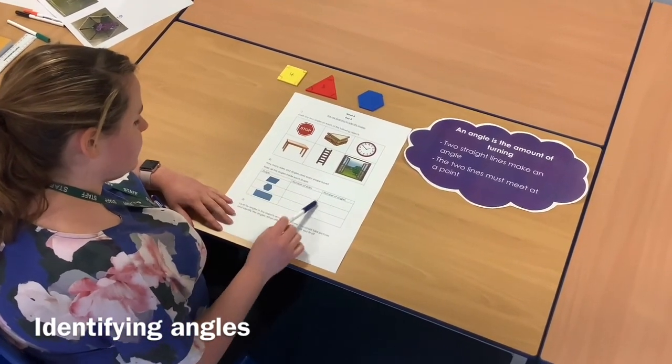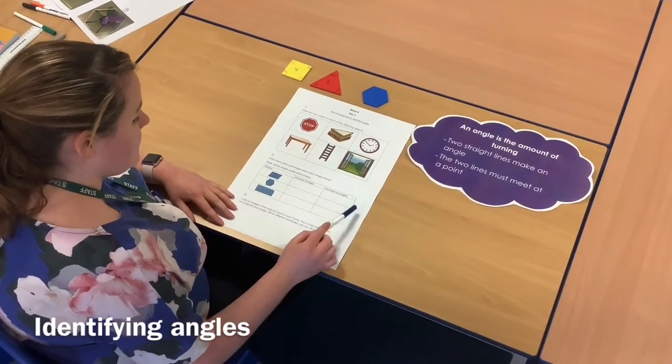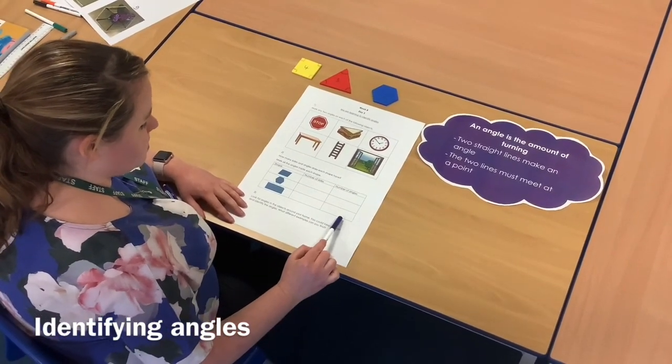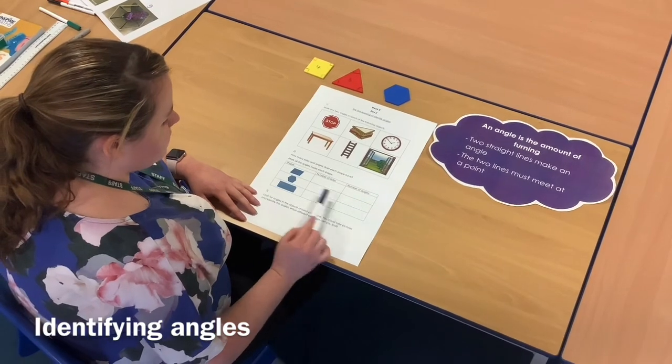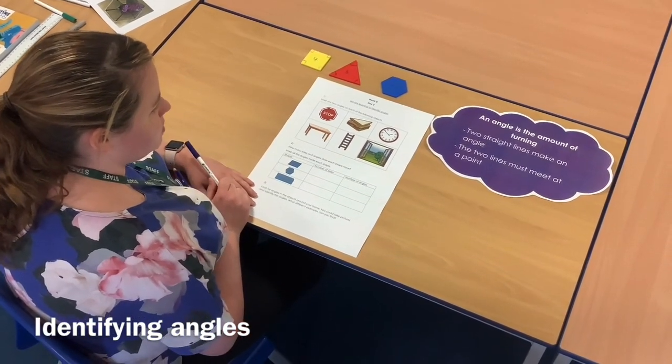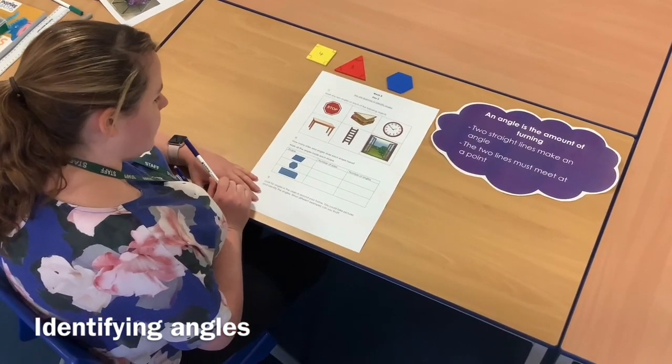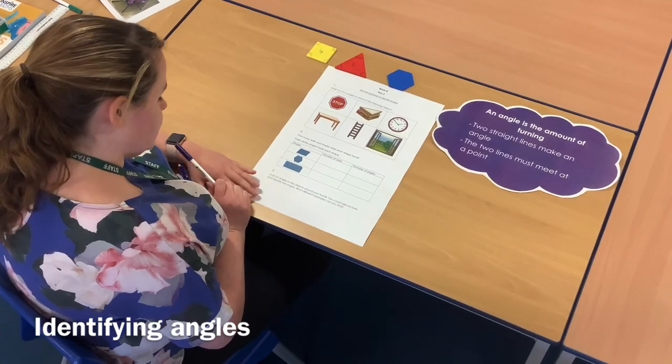For this one, I want you to look at the number of sides and the number of angles. Whilst you're doing that, I want you to think, what do you notice? Can you spot a pattern? And we'll discuss that tomorrow in the answers.